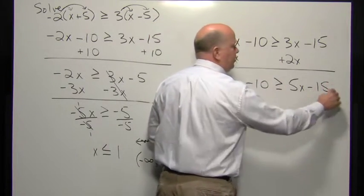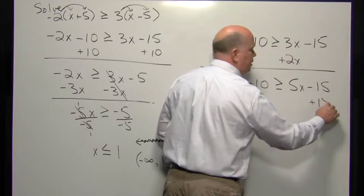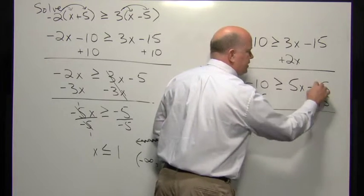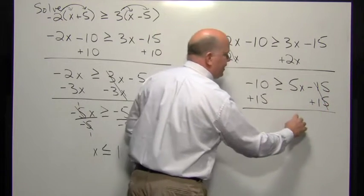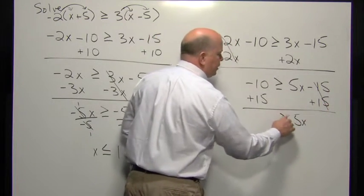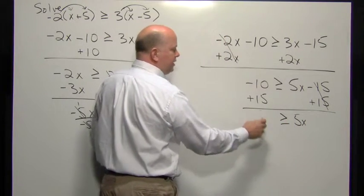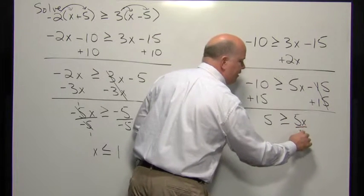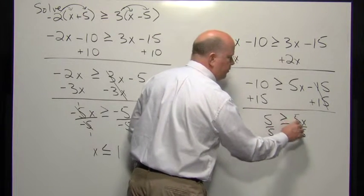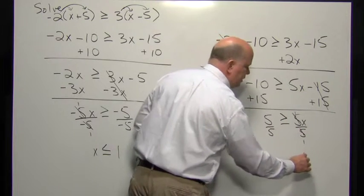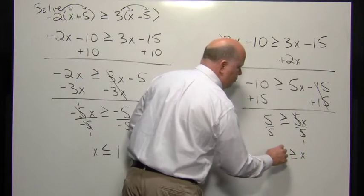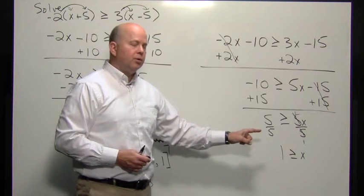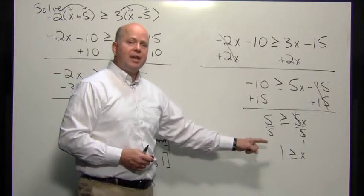We have negative 15, and in order to get rid of this negative 15, we add the inverse of that subtraction — this represents zero, and zero plus 5x is 5x. Here we have 15 minus 10, which is 5. We divide by this 5 as our coefficient, and 5 divided by 5 gives us 1. Now we have the inequality 1 is greater than or equal to X.